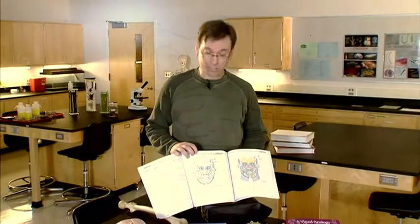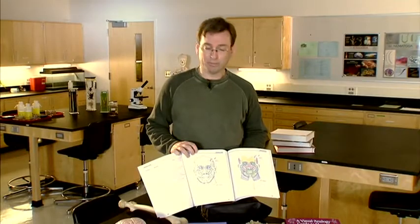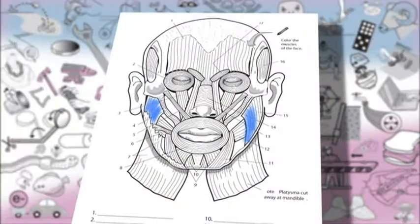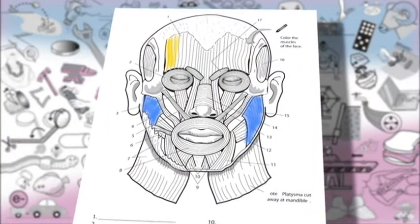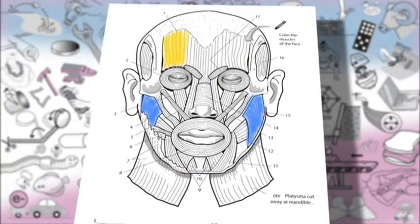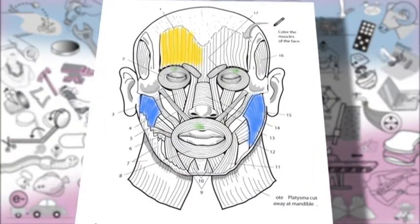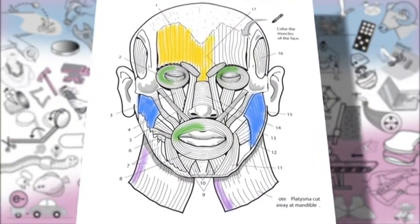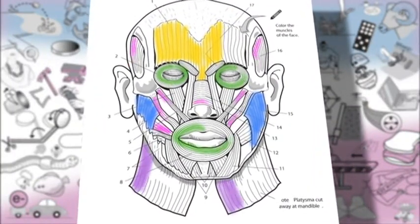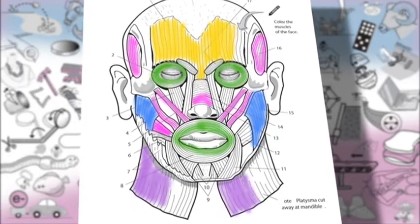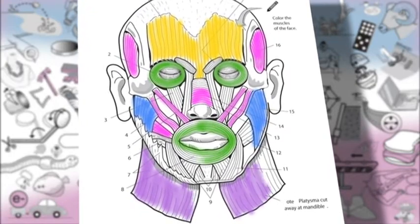A feature that students really like about the Visual Analogy Guides is that you can also use them as a coloring book. This gives an example of the muscles in the face and how students can color them in and identify them by labeling them as well.